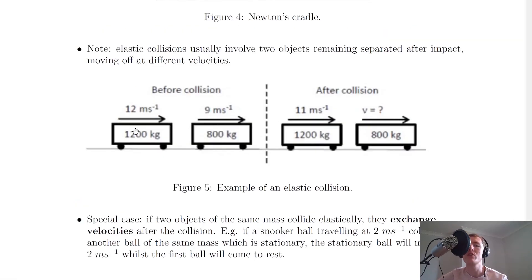So if we look back at the picture here, you see we have a 1,200 kilogram trolley moving at 12 meters per second and colliding with an 800 kilogram trolley moving at 9 meters per second to the right. So both are initially moving to the right.